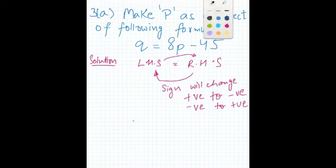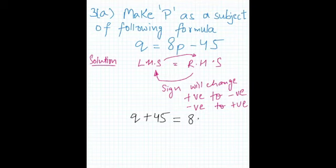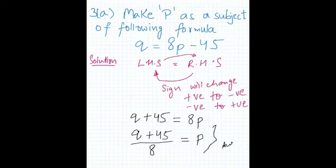So in order to make P as a formula, minus 45 from the right hand side will go to the left hand side and become plus 45, which equals 8P. By cross multiply method, 8 will go from P and make the denominator of the equation, which is the answer. That's how we make P as the subject of the formula by keeping it alone.